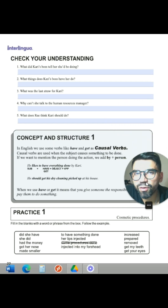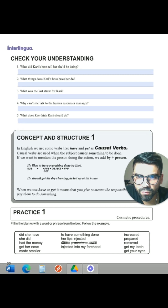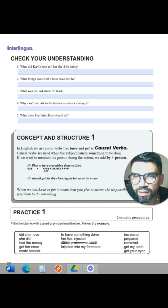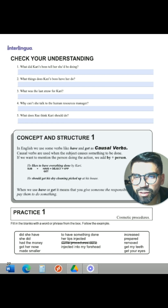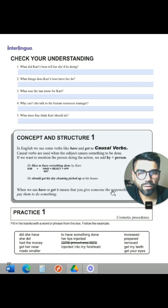This is the check-your-understanding with five questions. Question number one: What did Cari's boss tell her she'd be doing? Question number two: What did Cari's boss have her do? Question number three: What was the last straw for Cari? Question number four: Why can't she talk to the human resources manager? And question number five: What does Ray think Cari should do?